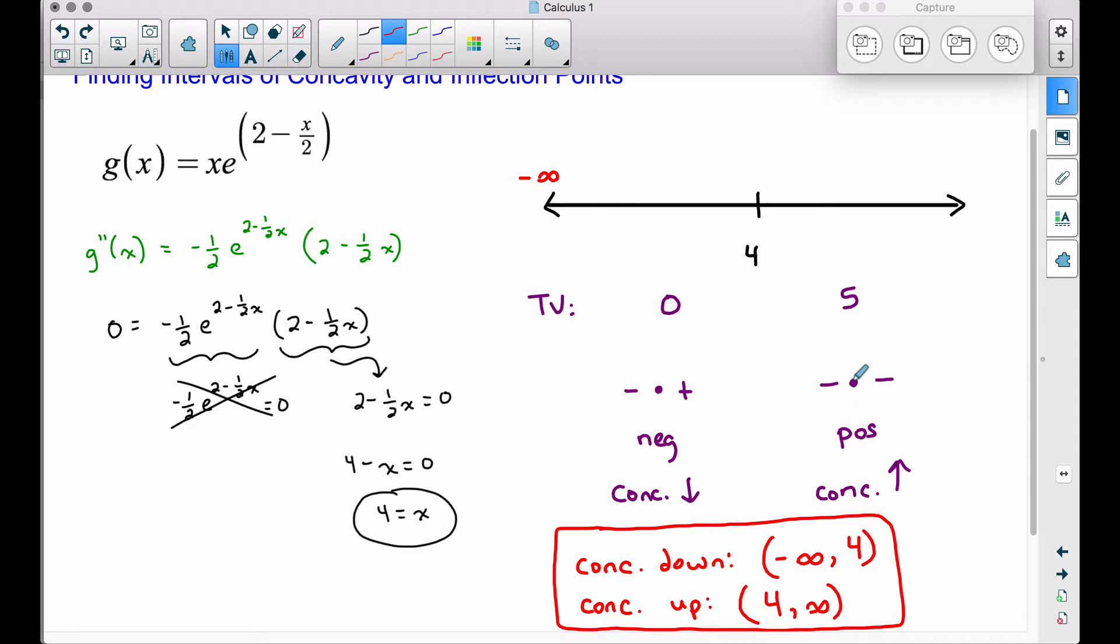These are our intervals of concavity. We're concave up because our second derivative was positive from four to infinity. Just make sure you don't include four there. And since our concavity changes, we have an inflection point right here.